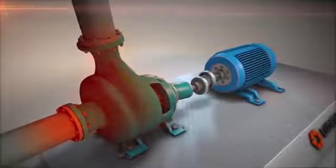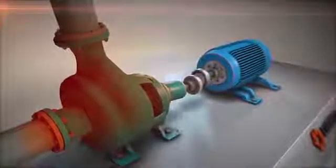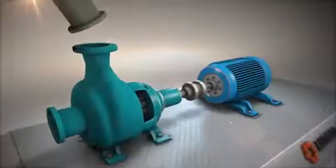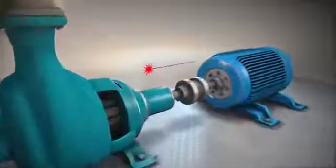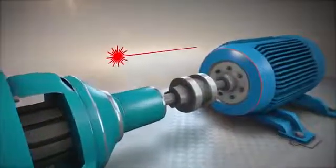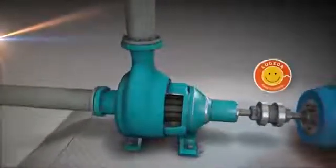Sometimes it is thermal growth that causes pipe stress and the resulting strain, changing the alignment at the coupling. It is important to check for pipe stress during pipe installation. A good laser alignment system can help you do this. Eliminating pipe stress will greatly improve the reliability of your machines.